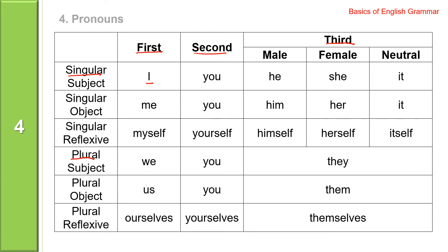Subject singular pronouns: I, you, he, she, it. And plural: we, you, and they. Object singular: me, you, him, her, it.